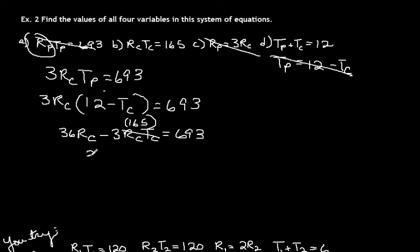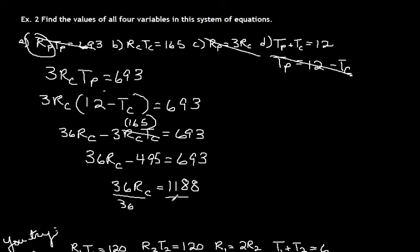And we're going to need to use our calculators. 36RC minus 3 times 165 is 495, equals 693. Add 495 to both sides, we get 36RC equals 1188.